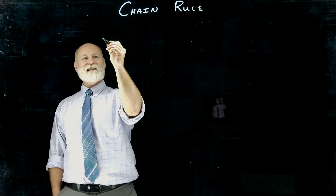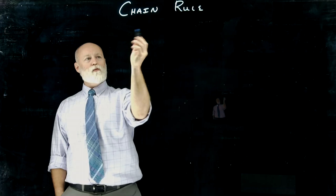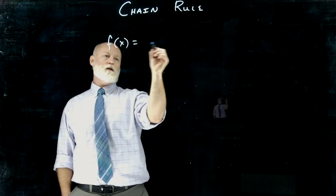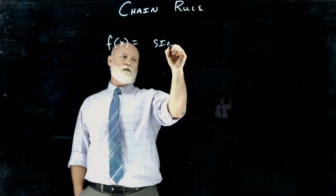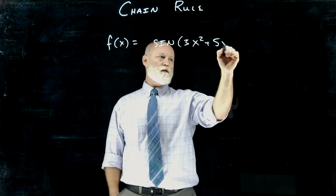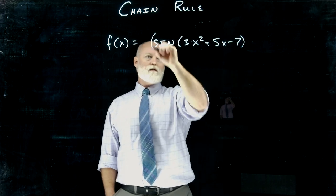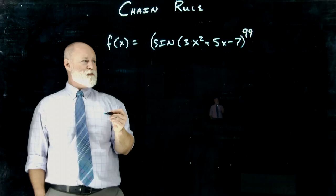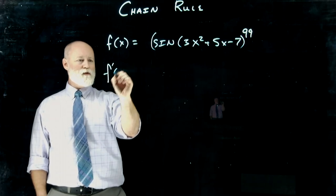So let's just say that we want to find f prime given that we have sine of 3x squared plus 5x minus 7 and all that's raised to the 99th power. So if we wanted to do that, we'd do f prime.